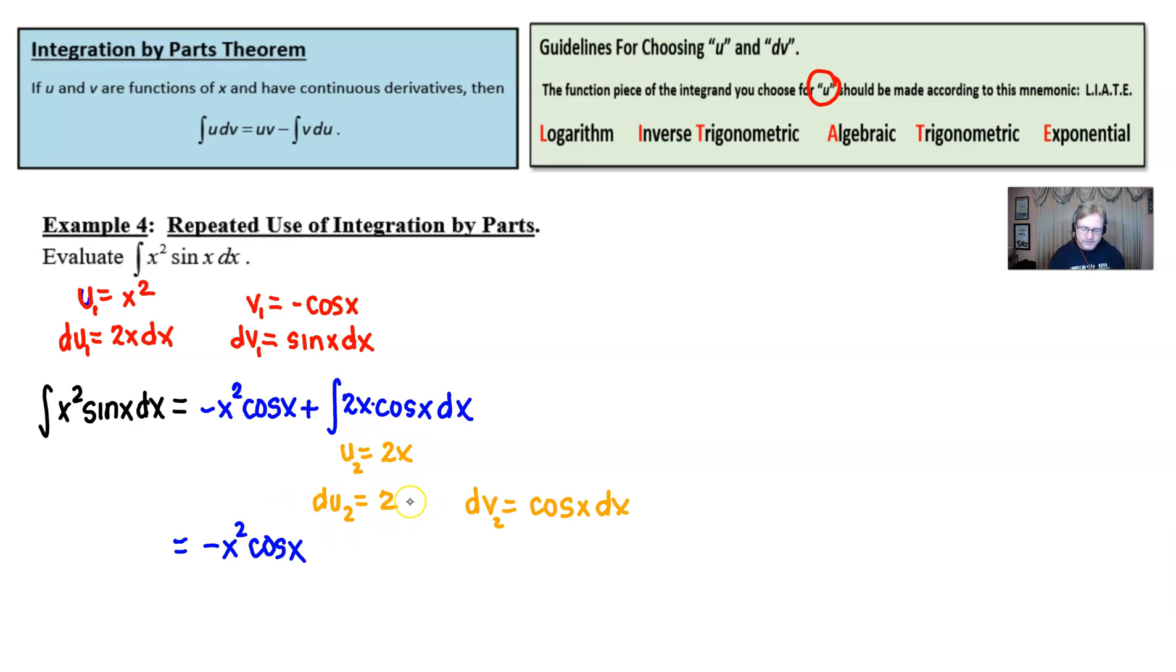And then when we integrate dv2, we get v sub 2, and the integration of cosine, that is positive sine of x. All right, I might have to move this down even more. All right, so you write down that first part, and then we drop down our plus sign, and we do our u2 times v2, right?